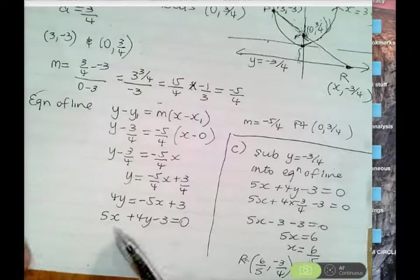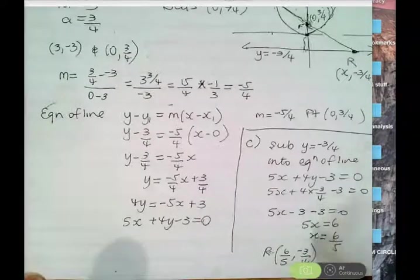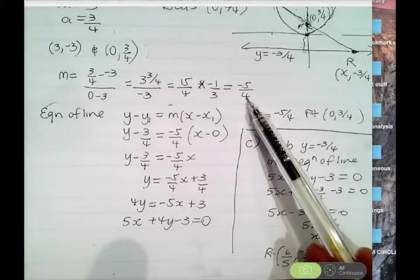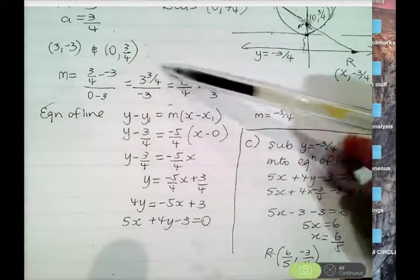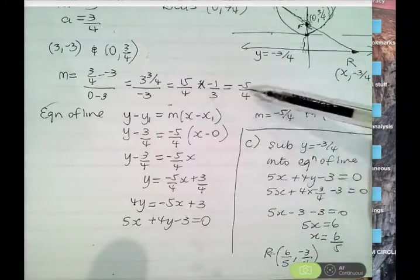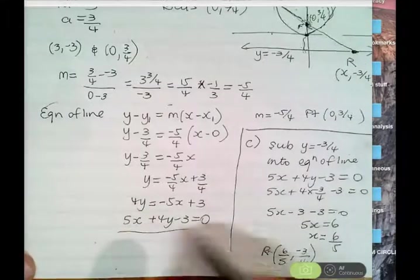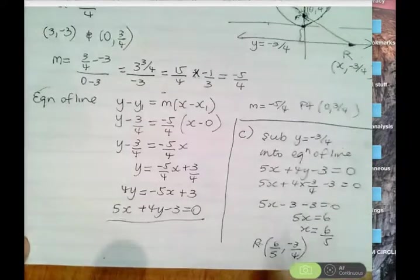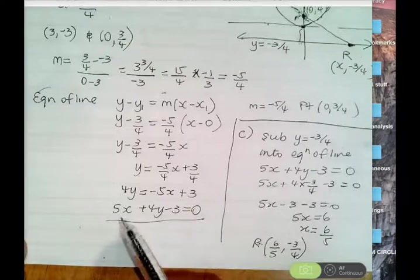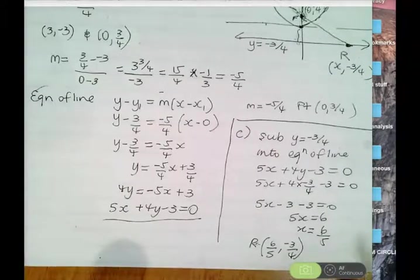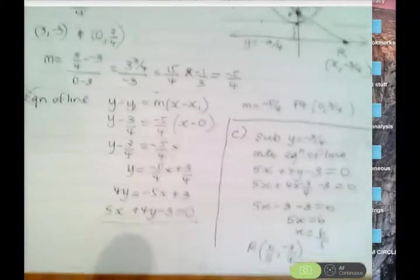Checking against the back of the book, they're getting 3x plus 4y minus 3 equals 0 and coordinates of R as (2, negative 3 quarters), suggesting a gradient of negative 3 quarters. I've double and triple-checked my working and cannot find an error. If you do see an error in my working, please let me know.